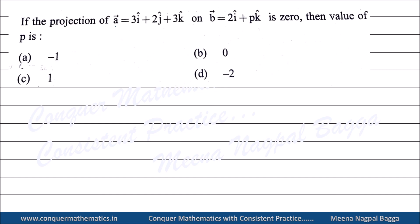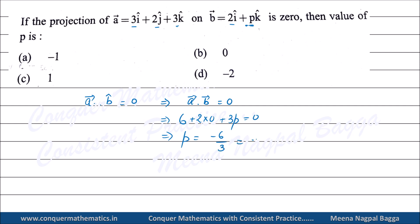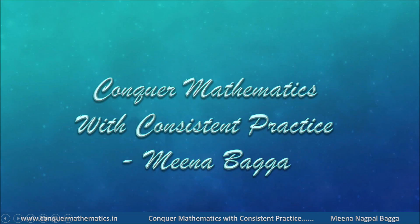Next: Projection of vector a on vector b is 0. Projection formula: a·b divided by magnitude of b = 0, meaning a·b = 0. Computing dot product: multiply x-components, y-components, z-components. This gives 6 + 3b = 0, so b = -6/3 = -2. Very simple question.